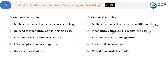In overloading, all methods have different signatures, but in overriding, all methods have the same signature. Overloading is a kind of compile-time polymorphism, and overriding is runtime polymorphism. In overloading, no special keyword is used, whereas in overriding the virtual and override keywords are used.